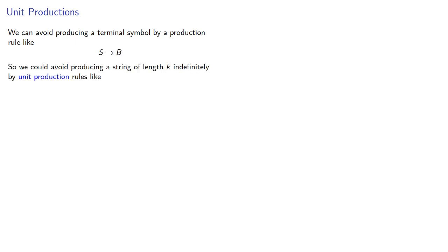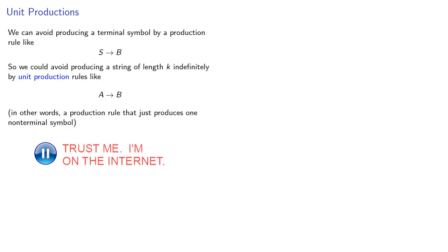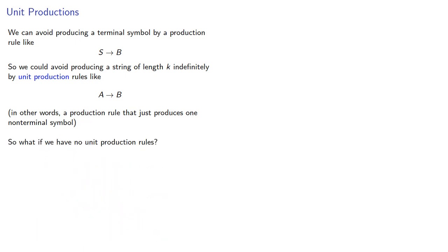We can avoid producing a terminal symbol by a production rule like S produces b. So we could avoid producing a string of length k indefinitely by unit production rules like A produces B — in other words, a production rule that just produces one non-terminal symbol. So what if we have no unit production rules?